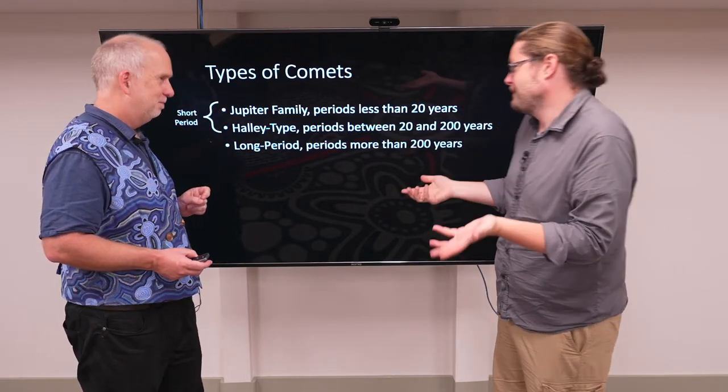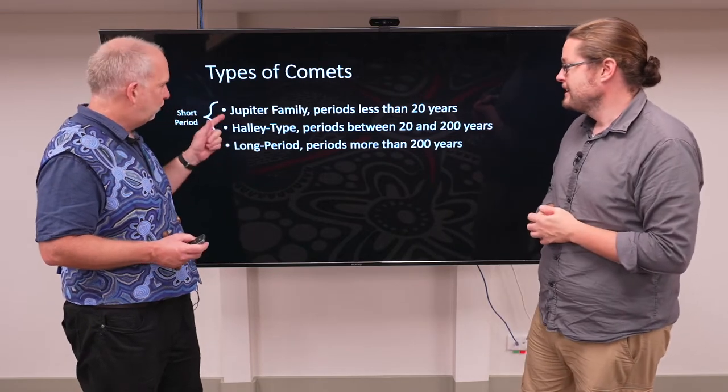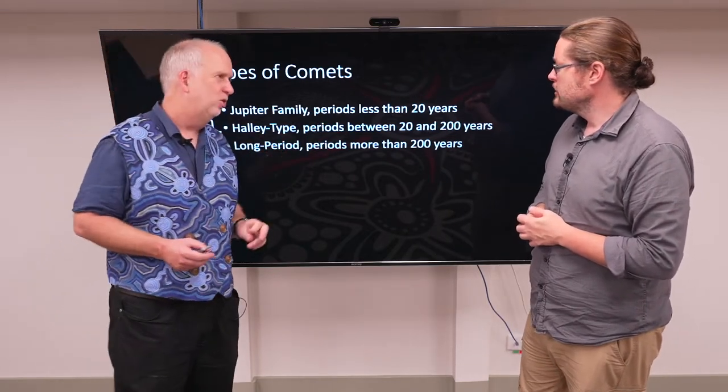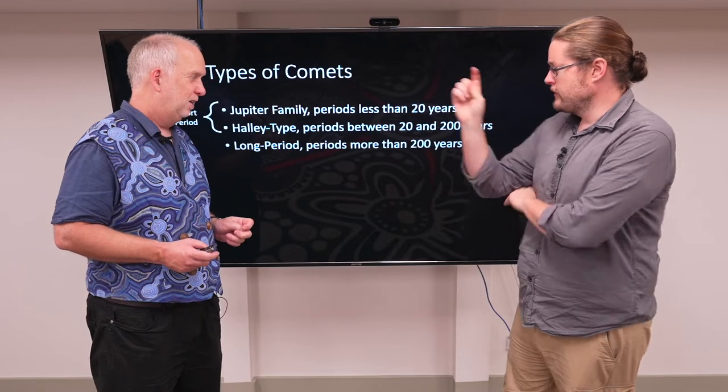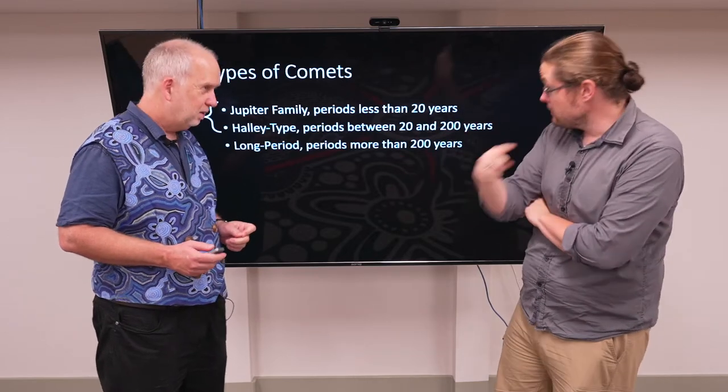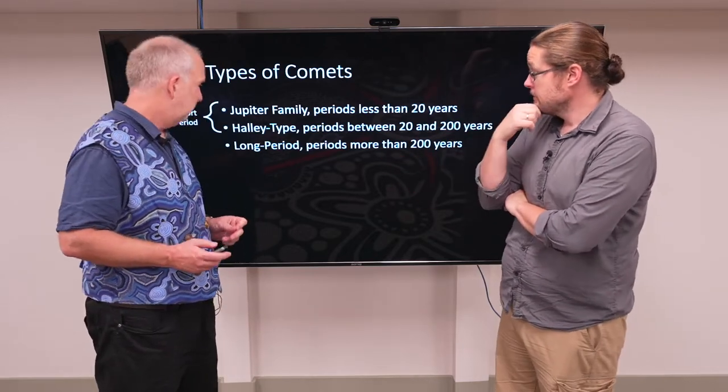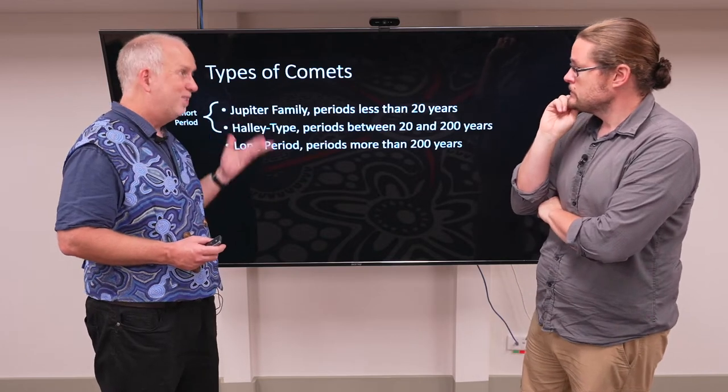I assume Halley after Halley's Comet? Yes, so the Jupiter family comets are defined as having periods of less than about 20 years. So they go around the Sun regularly, but less than 20 years? Yes, so these ones you can see repeatedly.